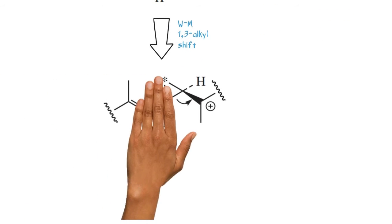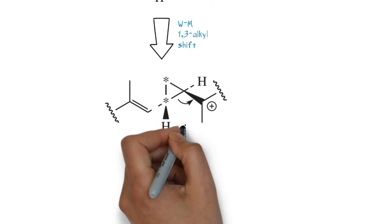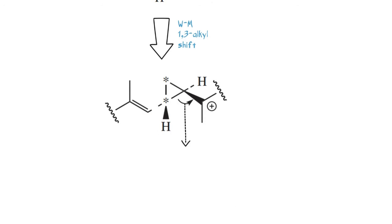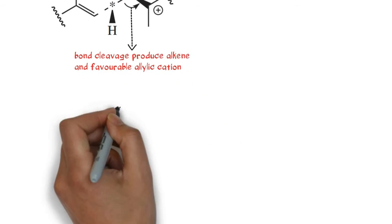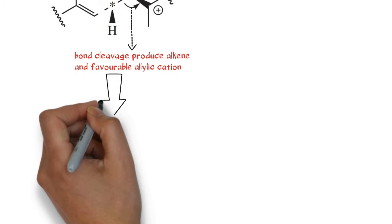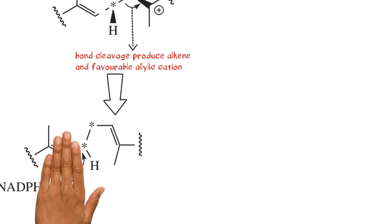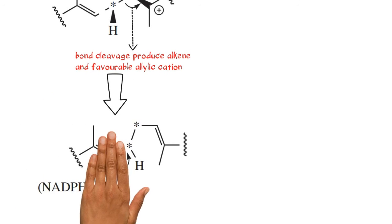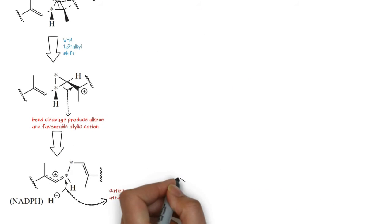A bond cleavage produces an alkene and a favourable allylic cation. The cation is then quenched by attack of a hydride, leading to the formation of squalene.